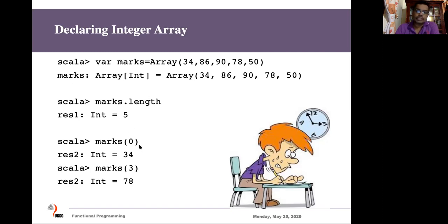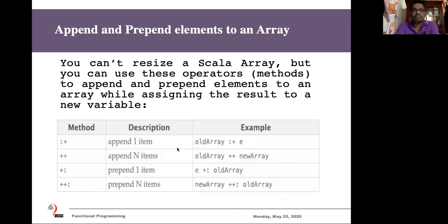If we want to get an individual element, we give the name of the array followed by brackets containing the index we want to retrieve. Similarly, if we want to assign something to a particular index or change an element of the array, we can give the array name, the index in brackets, an equals sign, and the new value. In Scala there are several predefined methods available, and some of those methods are defined as operators.